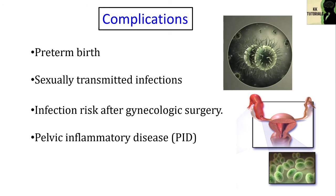Researchers do not know the exact cause of BV. However, we do know the condition most often occurs in those who are sexually active. BV is a result of an imbalance of good and harmful bacteria in the vagina. Douching, not using condoms, and having new or multiple sex partners can upset the normal balance of vaginal bacteria, increasing your risk for getting BV.